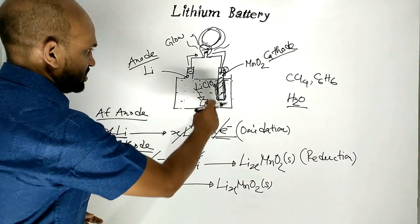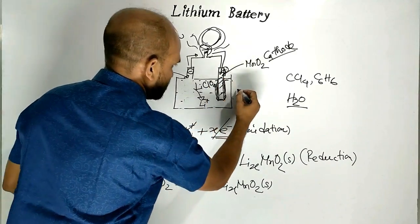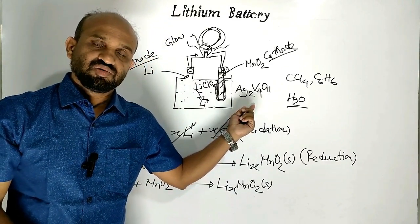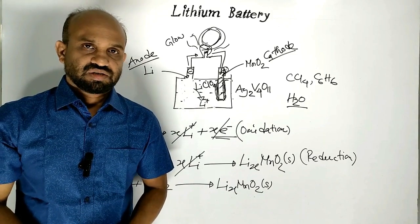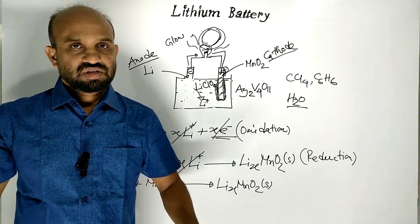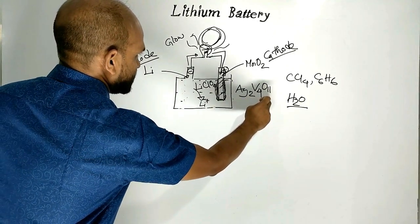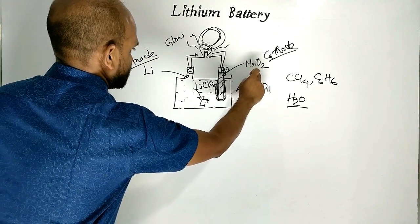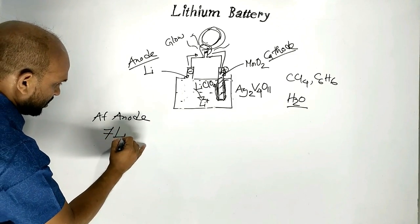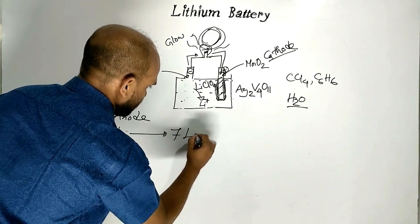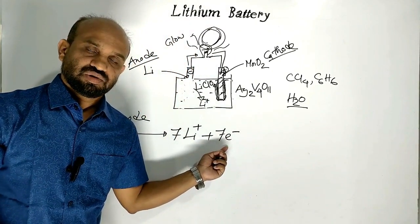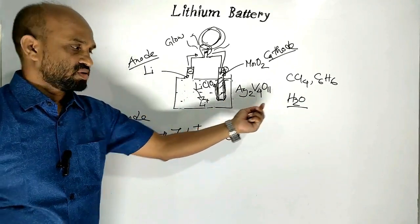In some cases, manganese dioxide is replaced by silver vanadium oxide, which is used as the cathode. Let us see the reactions that occur when silver vanadium oxide is used as cathode. The reaction at the anode: seven lithium atoms convert to seven lithium ions, and at the same time seven electrons are produced.